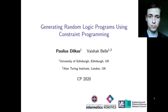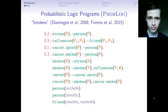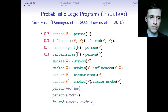This talk is about how constraint programming can be used to generate logic programs, with a particular focus on probabilistic logic programs. A common example of a probabilistic logic programming language is ProbLog, and a common example of a program in ProbLog is called Smokers.